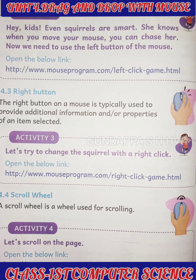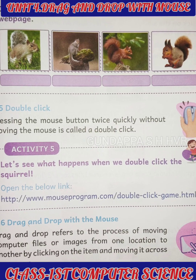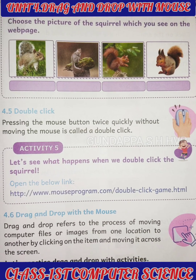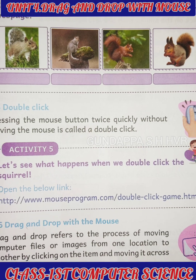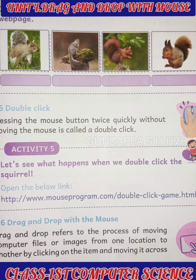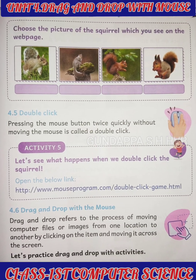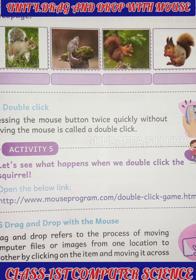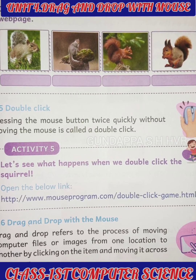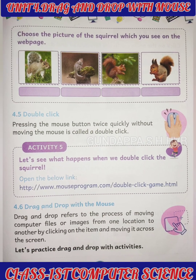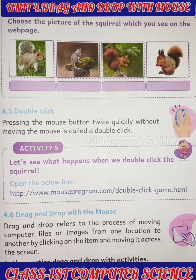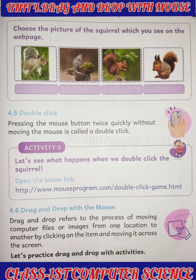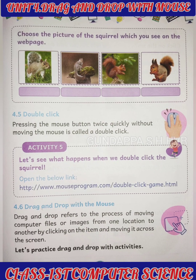Double click means pressing the mouse button twice quickly without moving the mouse. You must double-click using the left button only, not the right button. For example, if you want to open an icon on the desktop such as 'This PC,' move the cursor to that icon and double-click. A second method is to right-click on the icon and select the open option.